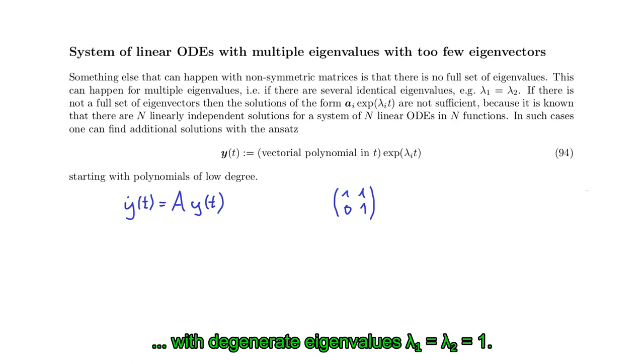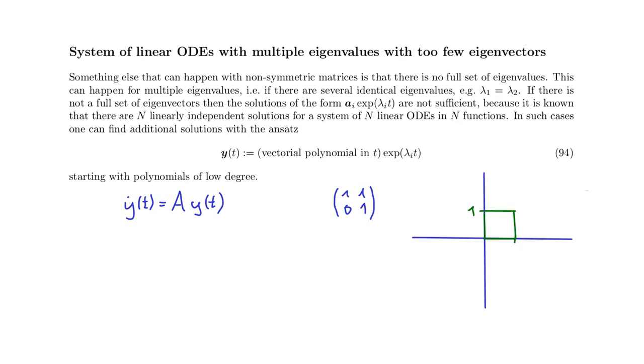One way to see this is to visualize the transformation that is performed by this matrix. For that we consider a unit square and how it is being transformed. Now the corners of the unit square are simply the unit vectors 1,0 and 0,1. And we know how they transform, namely simply to the columns of the matrix. If you multiply the matrix with 1,0 you pick out the first column. If you multiply it with 0,1 you pick out the second column. So the first column is this vector, the second column is this vector, and then you simply complete this to a parallelogram.